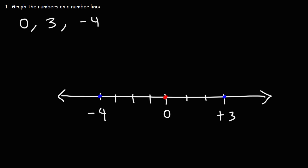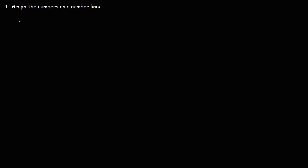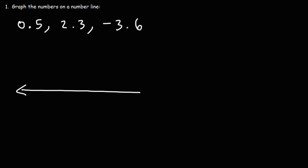Now let's talk about plotting decimal numbers. So let's plot positive 0.5, 2.3, and negative 3.6. Feel free to pause the video if you want to try this yourself. So let's do this one step at a time. Let's start with the first number, 0.5.